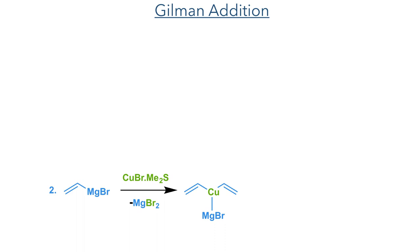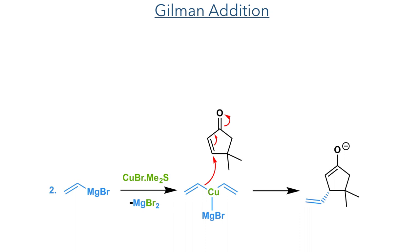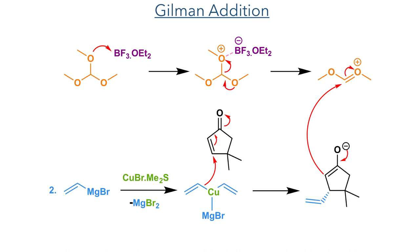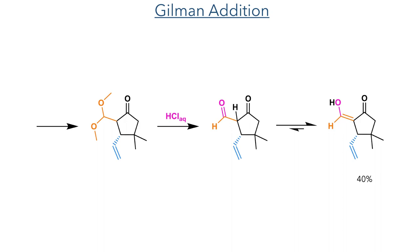The synthesis started with the Gilman addition of a vinyl cuprate generated from vinyl magnesium bromide. This underwent a conjugate addition to a cyclopentanone, generating an enolate intermediate that was then trapped with trimethyl orthoformate. This is first activated by coordination to boron trifluoride, which promotes the elimination of methoxide to generate the cationic electrophile that is attacked by the enolate. The addition of hydrotoric acid hydrolyzes the acetal, forming the aldehyde, which tautomerises to form the enol, with an overall yield of 40%.